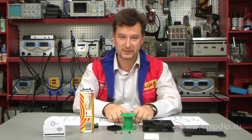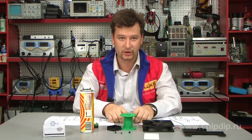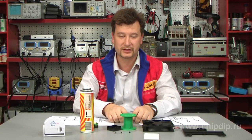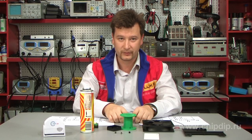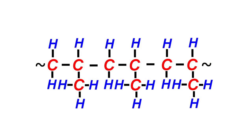According to the methyl group position in the polymer chain, polypropylene falls under several types. Atactic polypropylenes are those whose methyl groups are located randomly at both sides of the polymer chain.